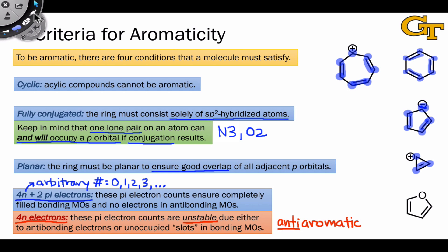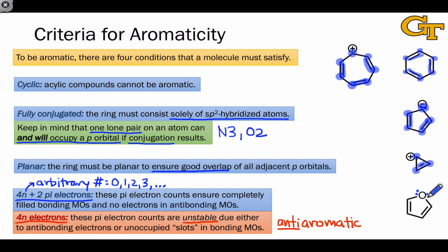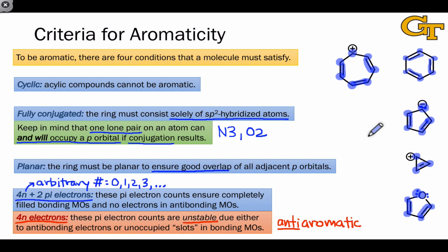We can apply these same criteria to aromatic heterocycles containing heteroatoms within the ring. This molecule is clearly cyclic. It is planar since every atom is sp2 hybridized, and it is fully conjugated. This is an O2 oxygen on which one of the lone pairs is occupying a p orbital, so that oxygen is sp2 hybridized as are all of these carbon atoms. As for pi electrons: 2 due to the oxygen lone pair — the other lone pair is in an sp2 hybrid — and 4 due to the carbon-carbon pi bonds, for a total of 6. This molecule is also aromatic.